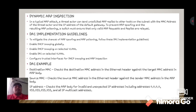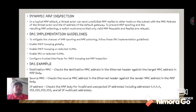DAI checks: Destination MAC — checks the destination MAC address in the Ethernet header against the target MAC address in the ARP body. Source MAC — checks the source MAC address in the Ethernet header against the sender MAC address in the ARP body. IP address — checks the ARP body for invalid and unexpected IP addresses, including 0.0.0.0, 255.255.255.255, and all IP multicast addresses.